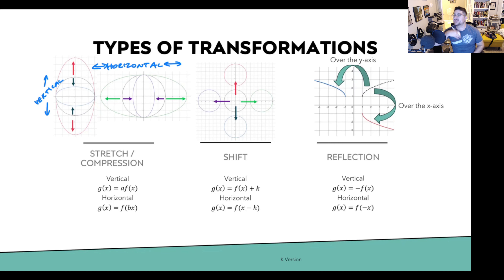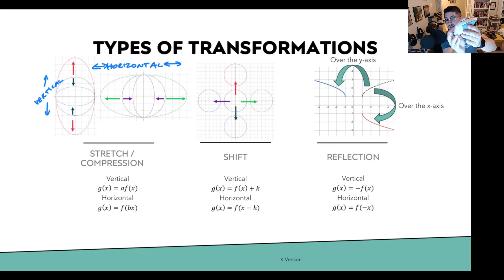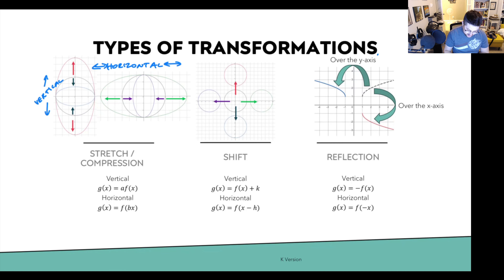We can also have reflections — this is flipping something. If I'm flipping it vertically, I'm essentially rotating it from one orientation to the other, but this point stays the same. If I was flipping it horizontally, I'm keeping the same angle and just flipping it that way. Horizontal reflections are over the y-axis; vertical reflections are over the x-axis.